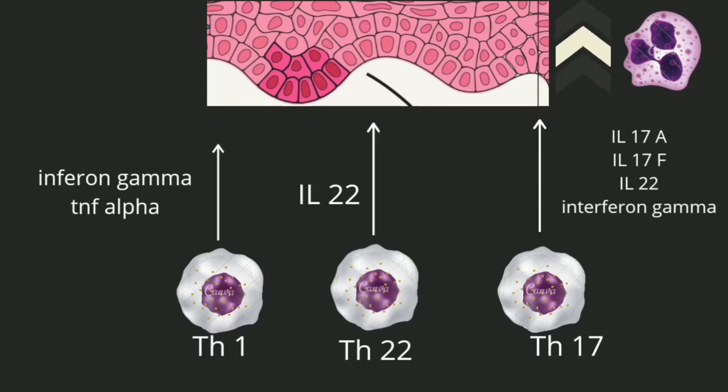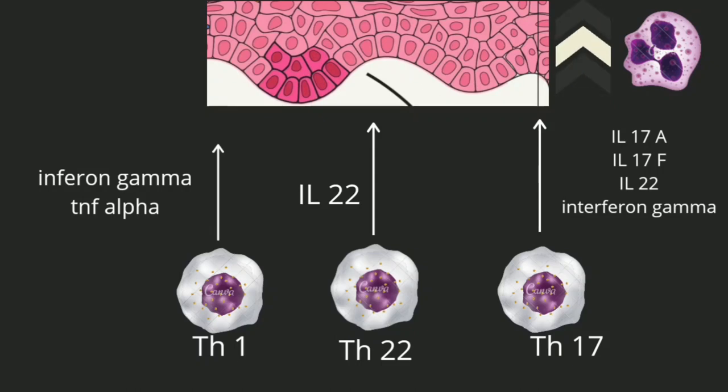Th22 cells only produce interleukin-22. The role of interleukin-22 in psoriatic lesions is not yet very clear; for now, we only know that it also helps maintain the inflammatory process.